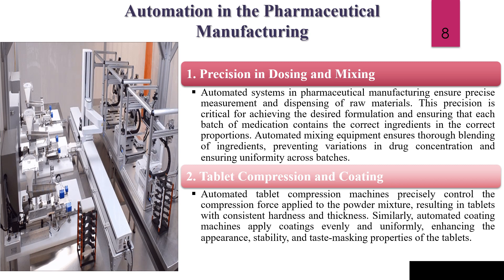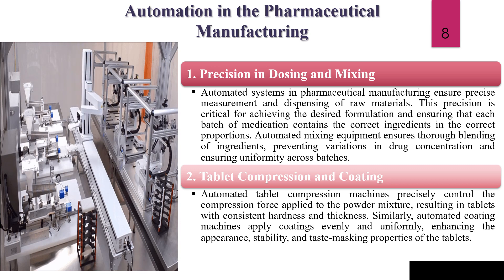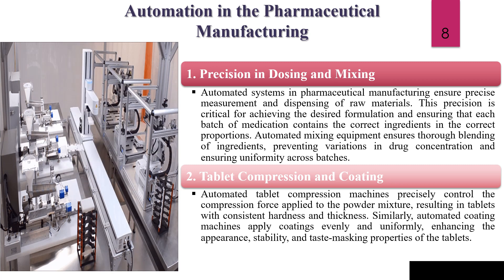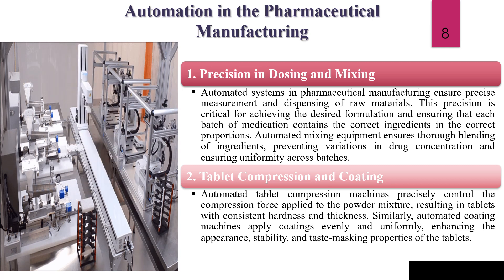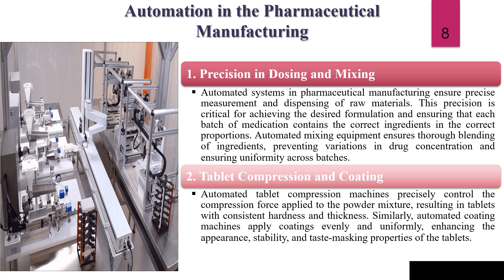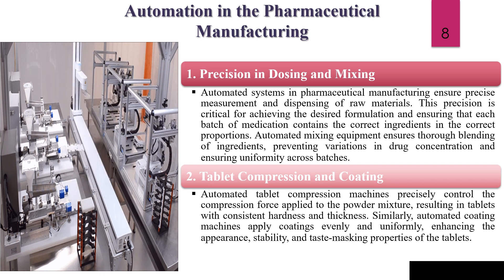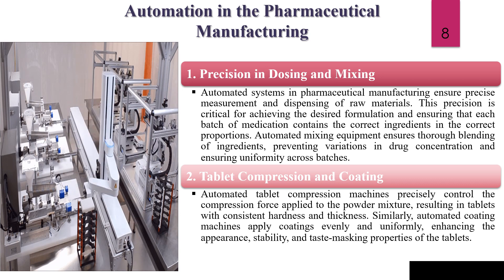Automation in pharmaceutical manufacturing first includes precision in dosing and mixing. Dosing and mixing are two major criteria mainly responsible for achieving the desired formulation and ensuring that each batch of medication contains the correct ingredients in the correct proportions. Second is tablet compression and tablet coating. Automated tablet compression machines provide adequate compression forces applied to the powder mixture, resulting in the formulation of different types of tablets.